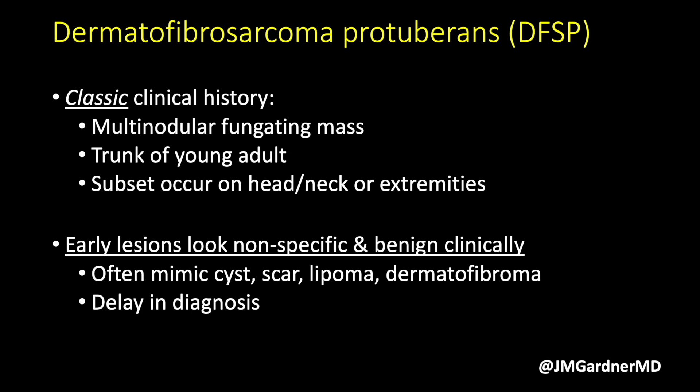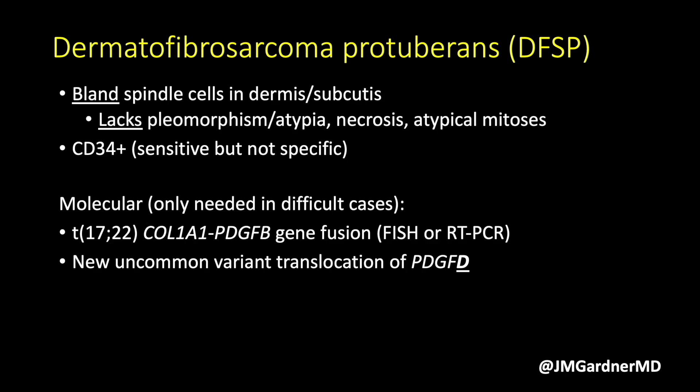The spindle cells in DFSP should be bland. They do not have pleomorphism or significant atypia — it is very rare to see pleomorphism in DFSP — and it is rare to see necrosis or atypical mitoses. DFSP actually looks more benign morphologically than a DF, which is paradoxical. You would think it should look more atypical, but it does not.